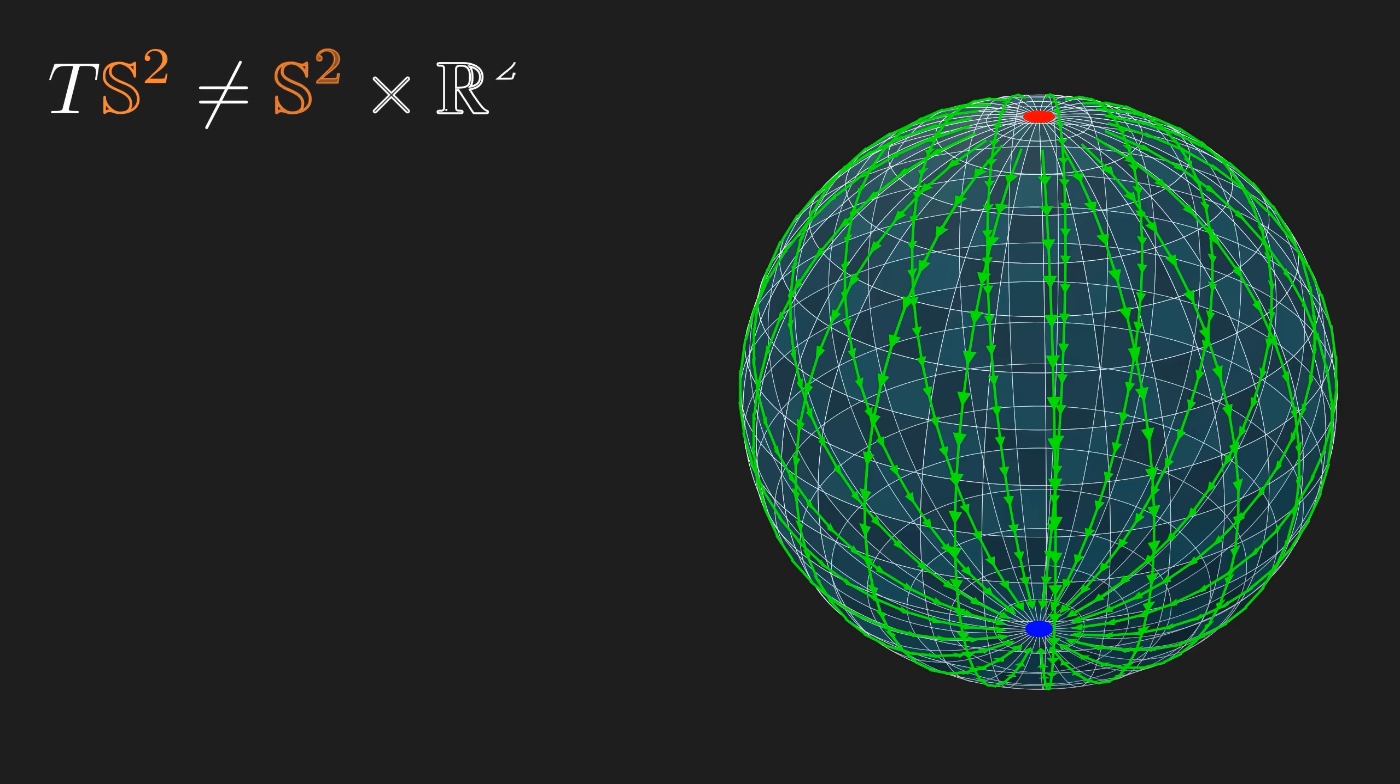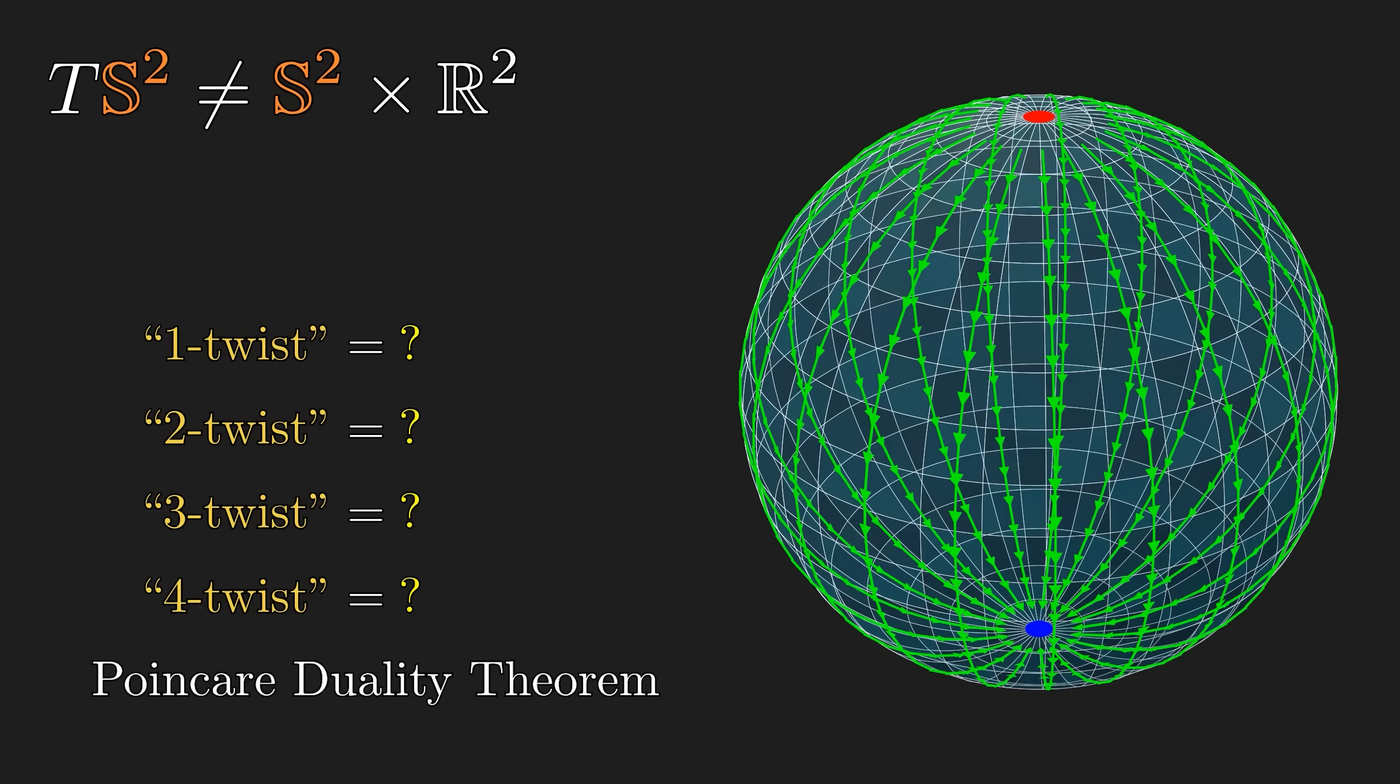So, the tangent bundle is not a trivial plane bundle. So, to what extent is this bundle twisted? For a deep reason, there cannot be a twist that exceeds the dimension of the original manifold.